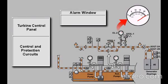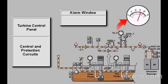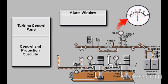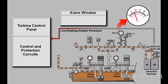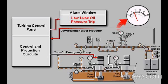During turbine operation, pressure trip switches 63QT-2A and 2B monitor the lube oil pressure in the bearing header at the back of the generator, farthest from the lube oil pumps. If pressure trip switches 63QT-2A and 2B sense a drop in lube oil pressure below 8 PSI, the emergency lube oil pump will start and the unit will trip on low lube oil pressure.